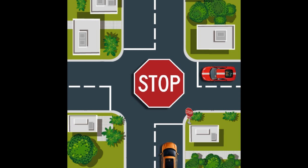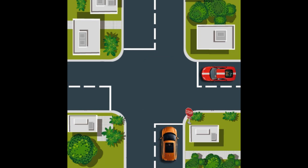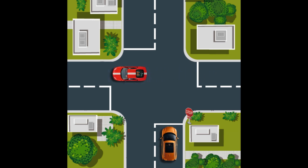At a four-way stop or all-way stop, every driver must come to a full stop and then check the state of the junction before she or he can proceed. Every driver has equal right to use the junction, but they must follow first-come, first-served rules.